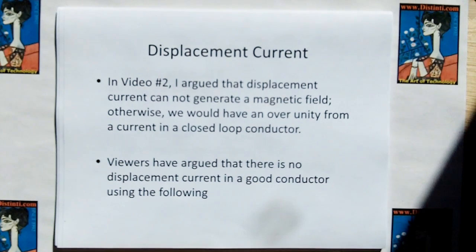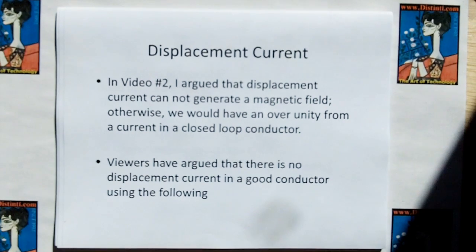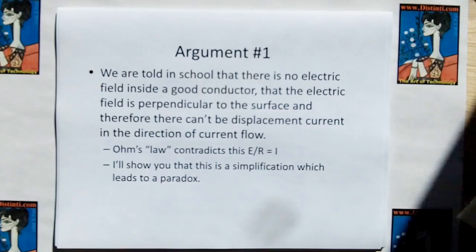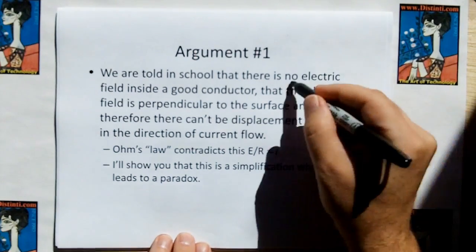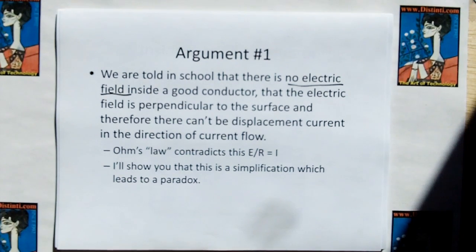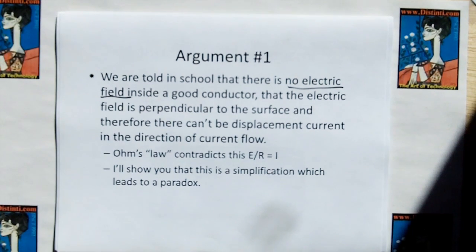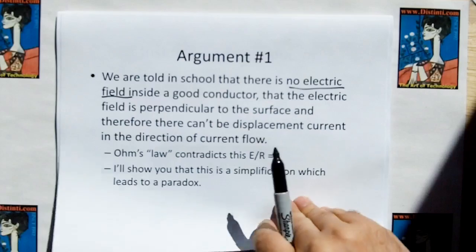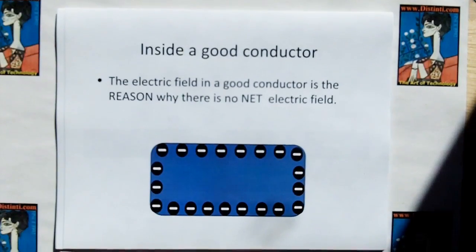Now let's switch over to the displacement current caper. Video number two argued that displacement current cannot generate a magnetic field, otherwise we would have over-unity from a current in a closed loop. Viewers have argued that there is no displacement current in a good conductor using two arguments. The first argument is we're told in school that there is no electric field inside a good conductor — the electric field is only perpendicular to the surface, and therefore there can't be a displacement current in the direction of current flow. But Ohm's law contradicts that. I'll show you that this is a simplification which leads to a bigger paradox than the displacement current caper.